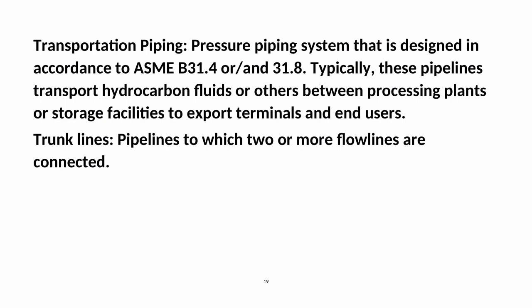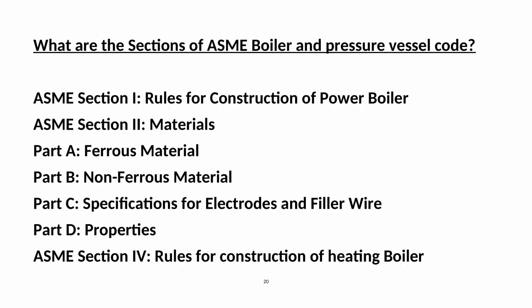Transportation Piping: Pressure piping system designed in accordance with ASME B31.4 or B31.8. Typically these pipelines transport hydrocarbon fluids or others between processing plants or storage facilities to export terminals and end-users. Trunk Lines: Pipelines to which two or more flow lines are connected. What are the sections of the ASME Boiler and Pressure Vessel Code?